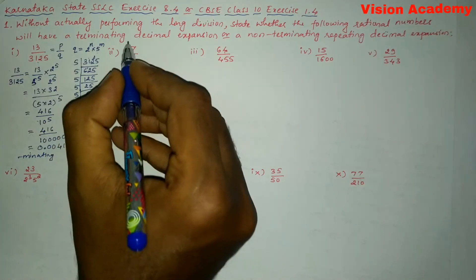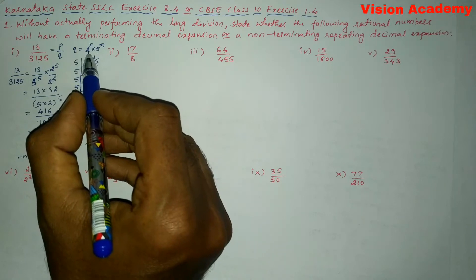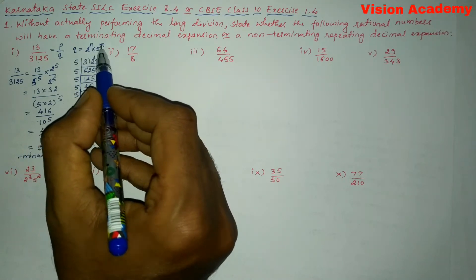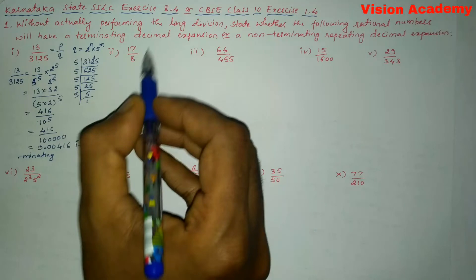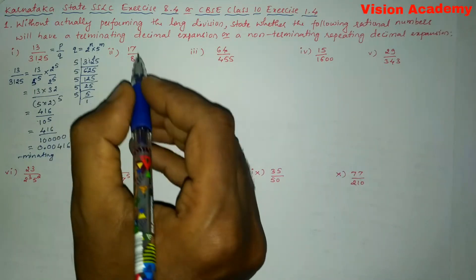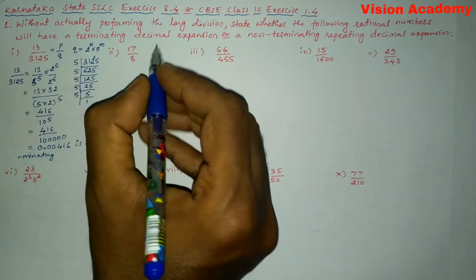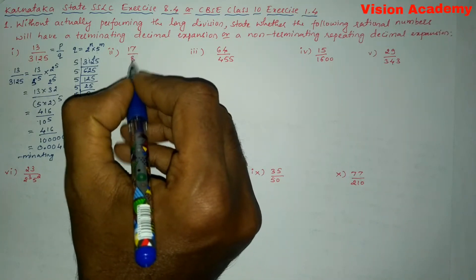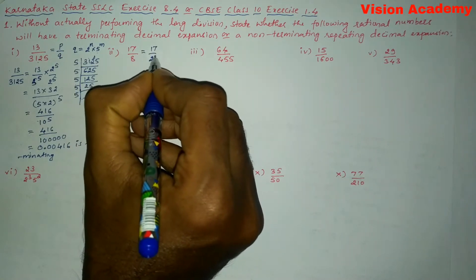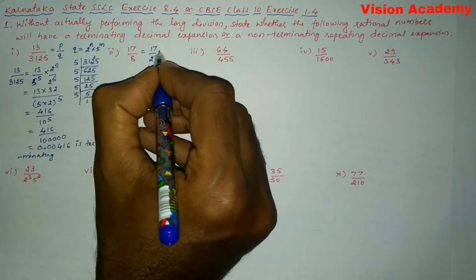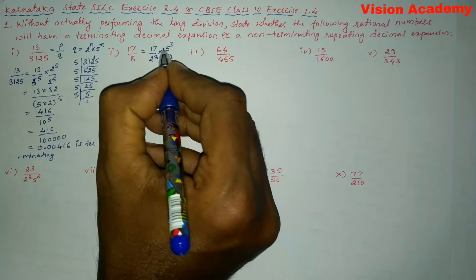Roman number two: 17 by 8. The same condition applies — if the denominator is in the form 2 to the power n into 5 to the power m, then it is terminating; otherwise it is non-terminating repeating. The denominator 8 can be represented as 2 to the power 3. So 17 by 8 is 17 divided by 2 to the power 3. Here, 5 is missing, so we multiply by 5 to the power 3 divided by 5 to the power 3, which equals one.